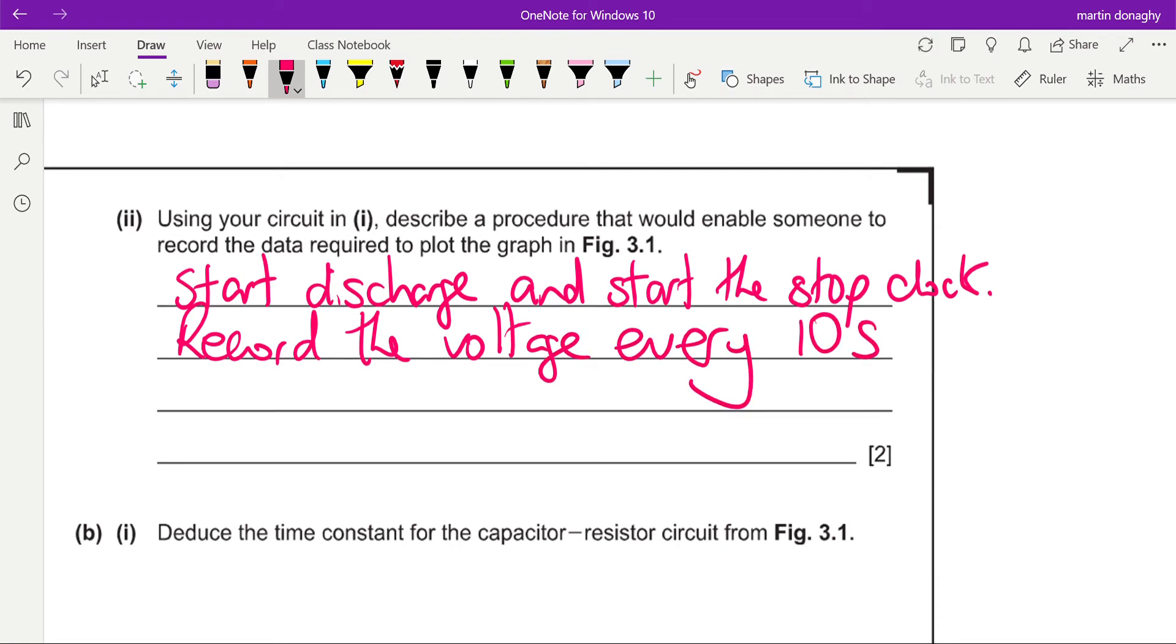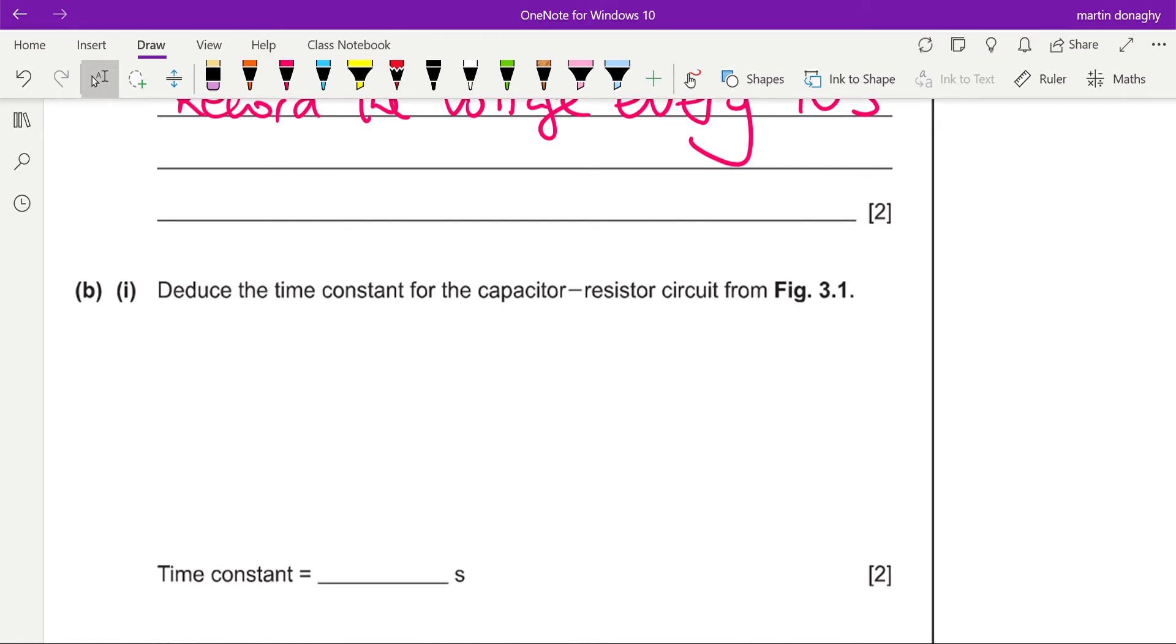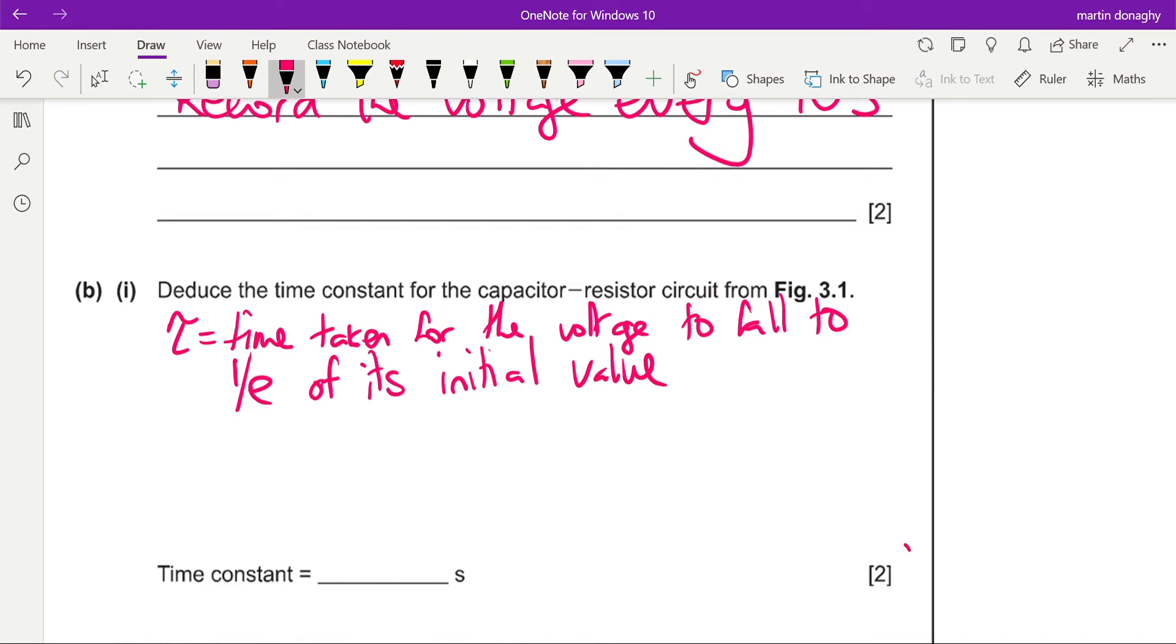And then record the voltage from the voltmeter every 10 seconds, a nice round number. Deduce the time constant for the capacitor-resistor circuit from figure 3.1. Now the time constant is equal to the time taken for the voltage to fall to 1 over e of its initial value. This is only worth two marks, which might affect what we do. Now 1 over e, another way of writing that is e to the minus 1, and if you type that into your calculator you get 0.37 or 0.368 if we want to be more precise of its initial value. So let's just go to our graph and work out how long that takes.